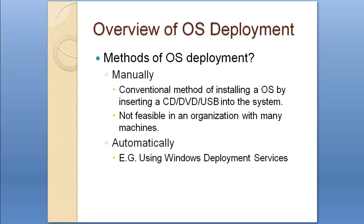So we move on to automatically. An example of deploying Windows automatically is by using Windows Deployment Services. When we say automatically, it means we want to automate this process. We do not want to go to every computer and insert a CD, DVD, or USB and install Windows that way. We want to do everything automatically.